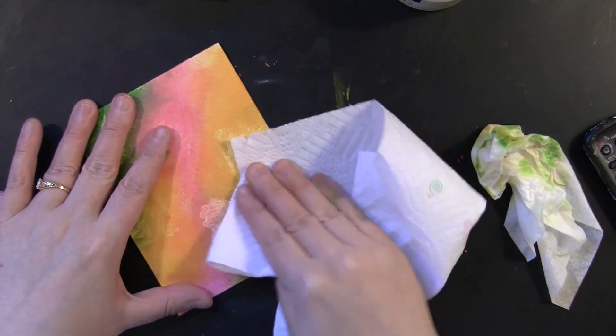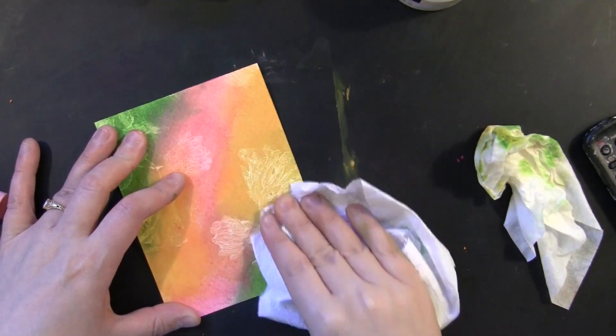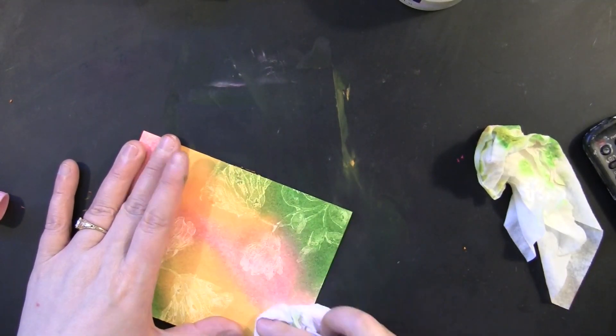Now this time instead of using a baby wipe, I'm just using a dry paper towel and buffing off some of that gelato color. You'll really start to see that ghost stamping come through. It's so pretty.